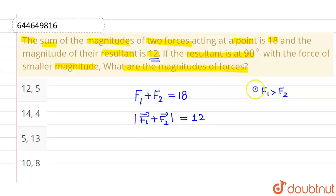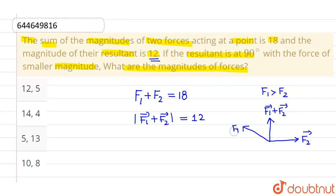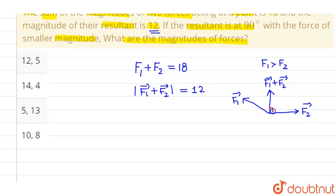The resultant makes 90 degrees with the force of smaller magnitude. So if F2 is the smaller force and F1 is the larger force at some angle, the resultant F1 plus F2 is perpendicular to F2. We can relocate F2 to form a right-angled triangle, where F2, F1, and the resultant F1 plus F2 form the three sides.